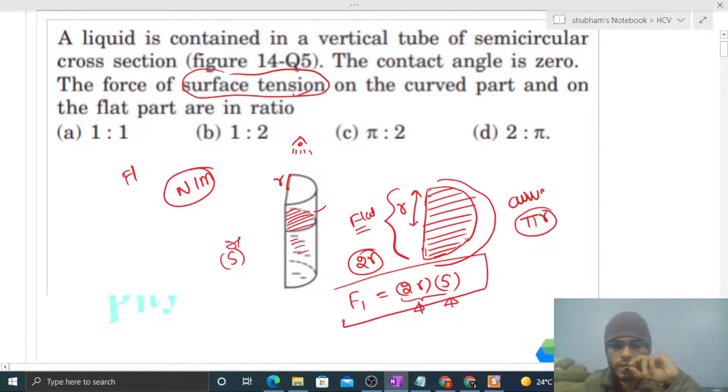So if you multiply surface tension with length, then you will get force. Similarly, the force on the curved part, let's say F2, that will be surface tension into length, that is πr. So just find the ratio F1 by F2 on the curved part and on the flat part.